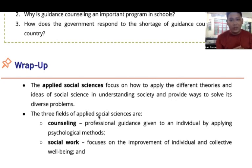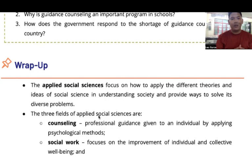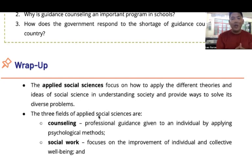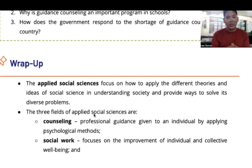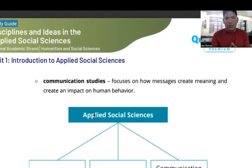To wrap up our discussion for today: Applied Social Sciences focus on how to apply the different theories and ideas of social science in understanding society and provide ways to solve its diverse problems. The three fields of applied social sciences are: first, counseling, which is professional guidance given to an individual by applying psychological methods; social work, which focuses on the improvement of individual and collective well-being; and communication studies, which focuses on how messages create meaning and impact human behavior.